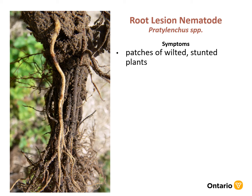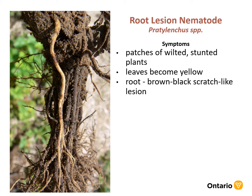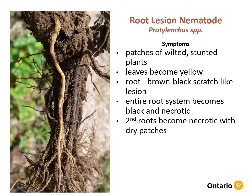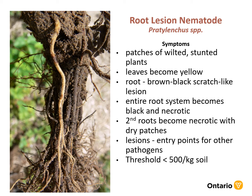Root lesion nematodes will cause patches of wilted, stunted plants. Leaves will turn yellow and roots will have dry, scratch-like lesions on them. The entire root system can become black and necrotic, and secondary roots become necrotic in dry areas. Secondary roots develop in response to damaged root tips, creating a brushy, witch's broom appearance to the root system. The threshold for root lesion nematodes is 500 per kilogram of soil.